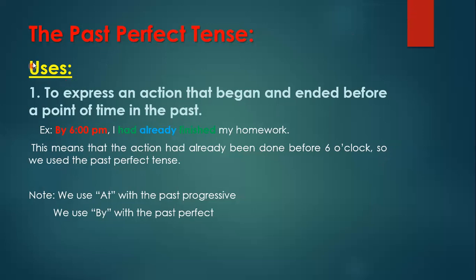Let's start with the uses. When do I use the past perfect tense? The first situation: when I want to express an action that began and ended before a point of time in the past. Remember, it's all happening in the past, and 'perfect' means it started and ended before a specific point in time. For example, by 6 p.m. — meaning before this time — I had already finished my homework. This action had already started and ended before that point in time, before 6 o'clock.